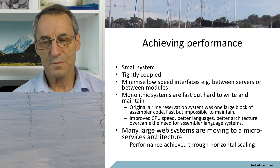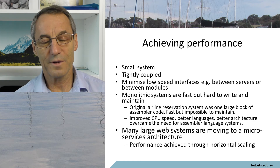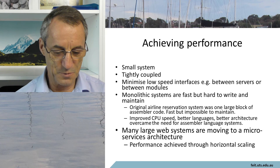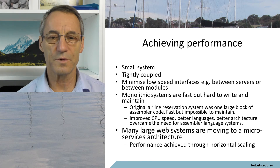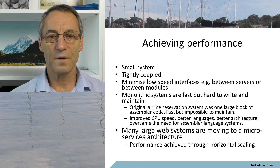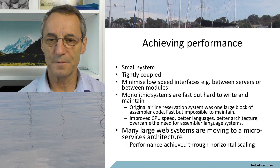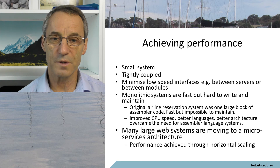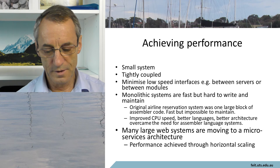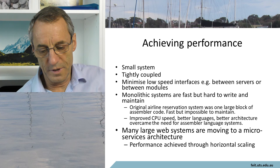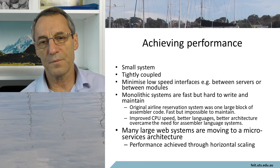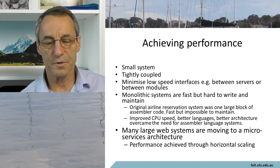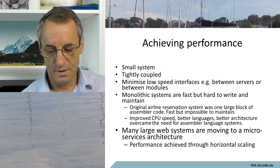Monolithic systems are fast, but they are really hard to maintain. The original airline reservation system was called the Sabre system, and it was written essentially as one great big module of assembler code. It certainly was very fast, but it wasn't possible to maintain. So improved CPUs, better languages, and better architecture have largely overcome the need to write those large monolithic assembler systems.